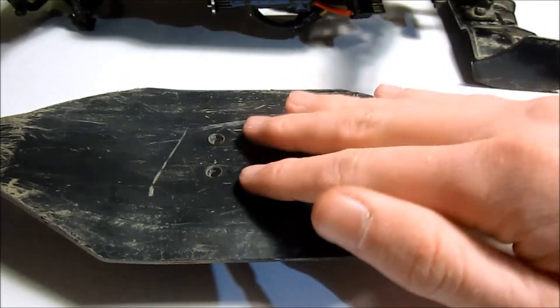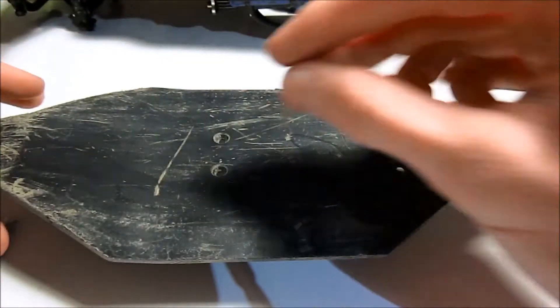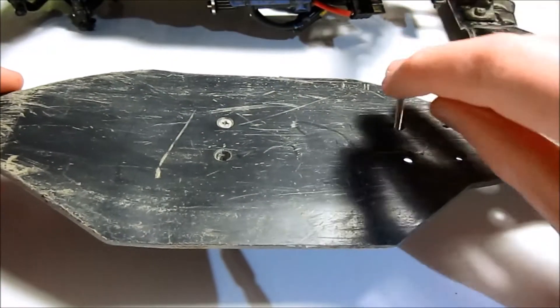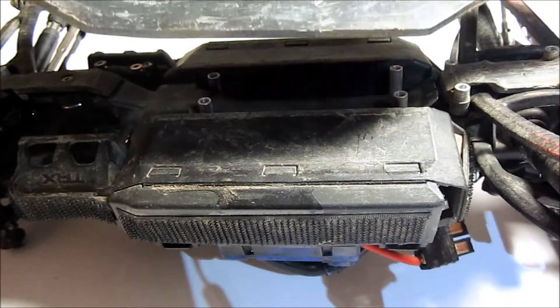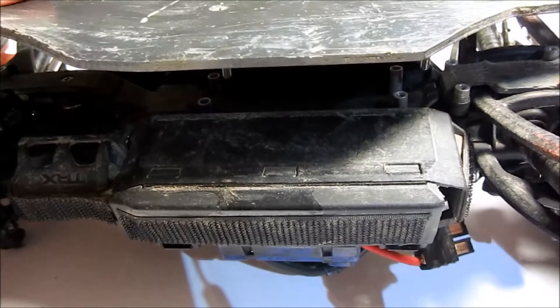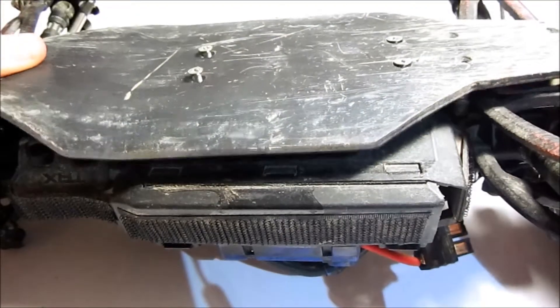Next step, take your T-bone skid plate and the four long screws and put them all in like this. When that's done, take your T-bone and hold it like this, and slide the screws in the spacers just like that.